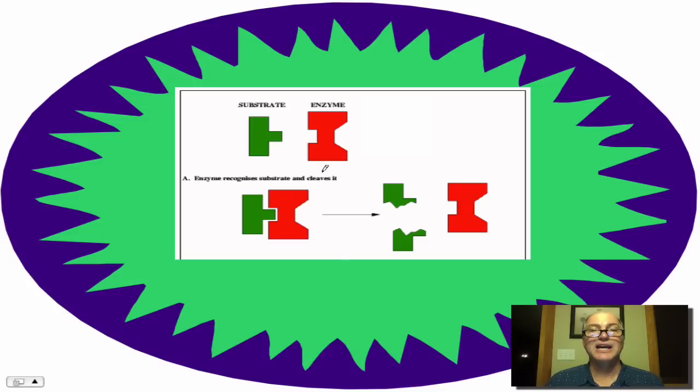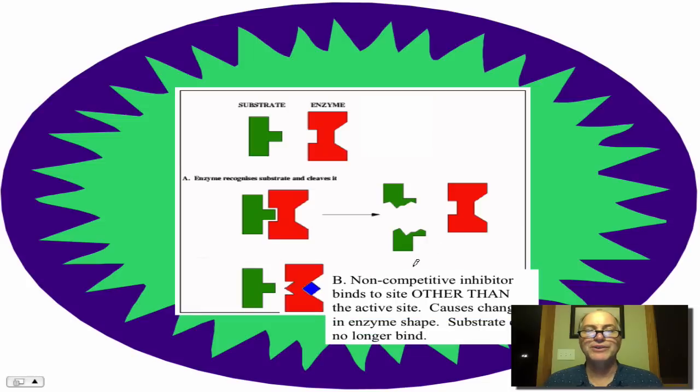Now, a second type of inhibition is called non-competitive inhibition. And here we simply have a substrate binding to an enzyme in a lock and key fashion. And when it binds, the substrate splits in two, so that looks like a decomposition reaction. However, a non-competitive inhibitor binds to some site other than the active site. So look at this blue molecule. It's binding here to a site, not the active site, and when it does bind, it causes the active site's shape to change, and therefore the substrate can no longer bind.